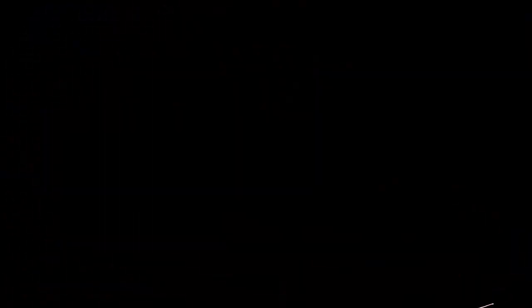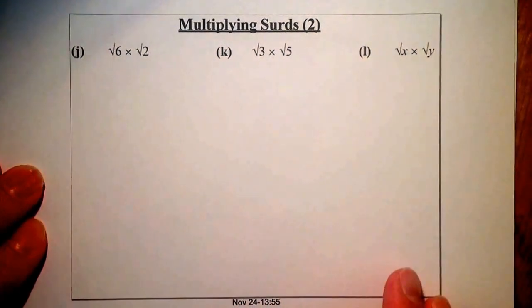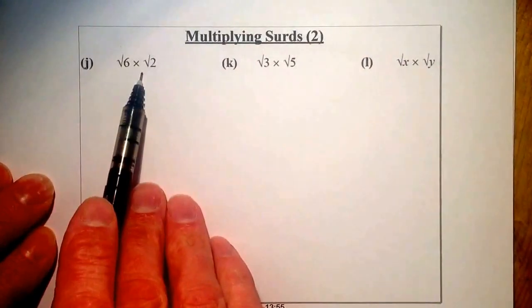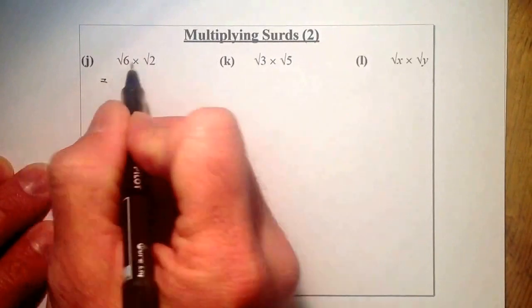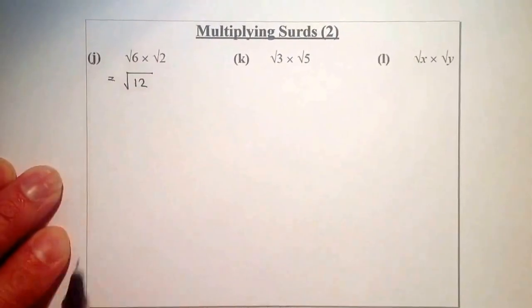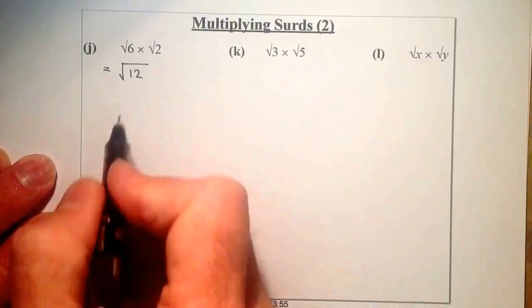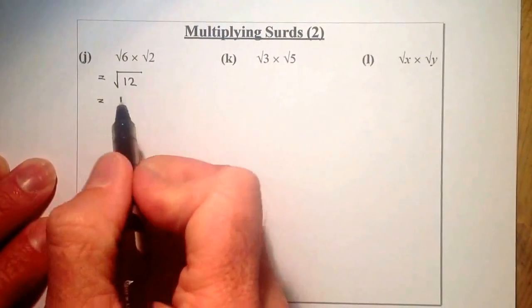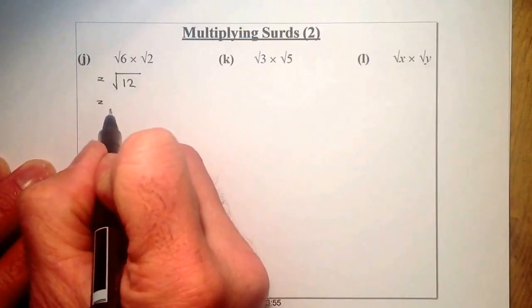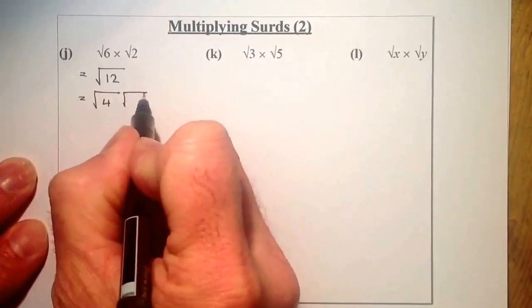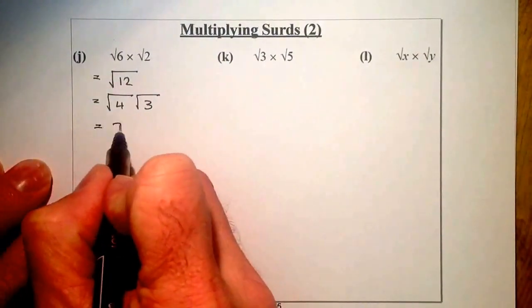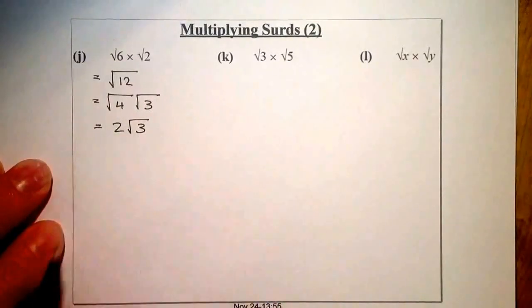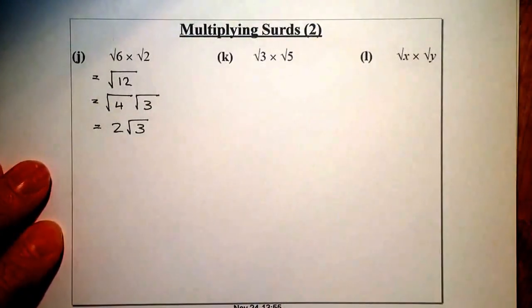Let's look at the next step in multiplying surds. I've got root 6 times root 2. What I'll do is multiply the roots together to get root 12, because 6 times 2 is 12. I'll then simplify root 12 by thinking about a square number that multiplies with another number to give 12 — and 4 and 3 fits the bill. Taking the square root of 4 gives me 2. I can't simplify the 3, so that stays as root 3, giving me 2 root 3 as my final answer.